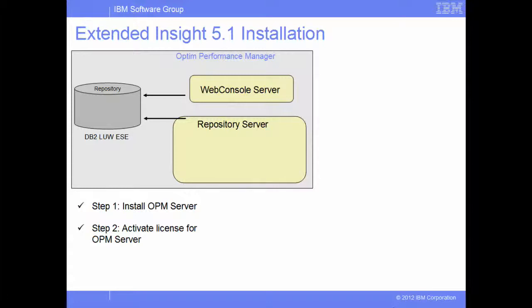First, let's quickly review the architecture of Extended Insight. The IBM Infosphere Optim Performance Manager Extended Insight feature contains a server component and a client component. The Extended Insight server is embedded in the repository server and has three sub-components: the Extended Insight Controller and the Extended Insight Monitoring Server. The controller and the monitoring server listen on two different ports for all the Extended Insight clients.